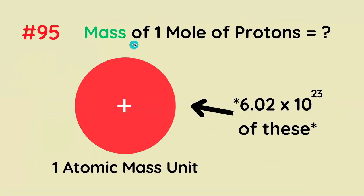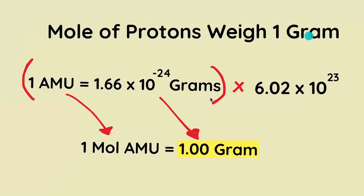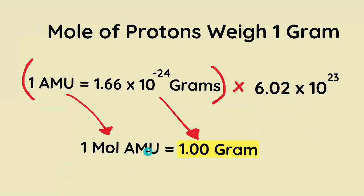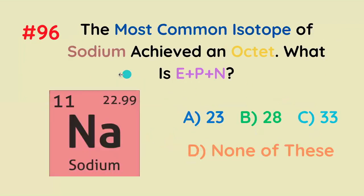A mass of 1 mole of protons is equal to what? The correct answer is 1 gram, because 1 AMU is 1.66 times 10 to the negative 24 grams, and if we multiply each side by a mole — 6.02 times 10 to the 23 — we get that 1 mole of AMU equals exactly 1 gram. The most common isotope of sodium achieves an octet.